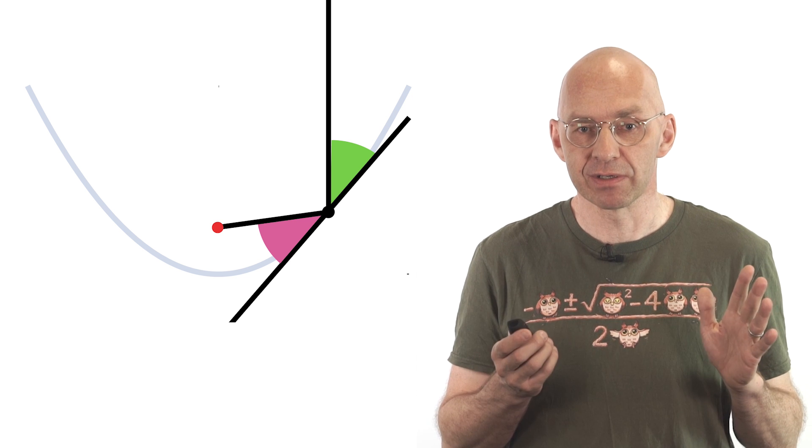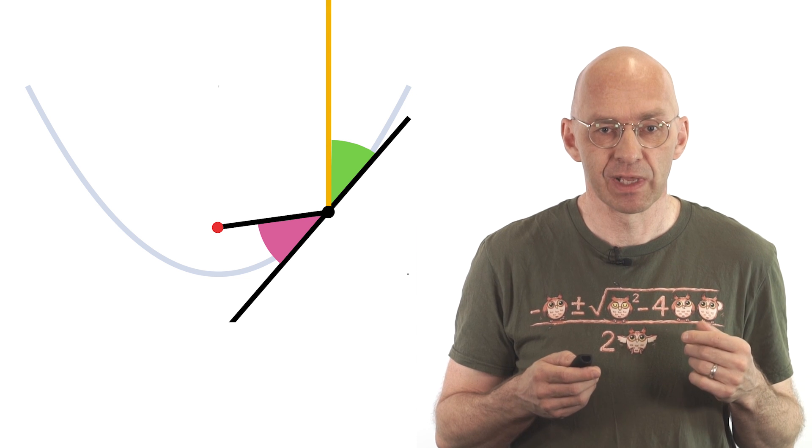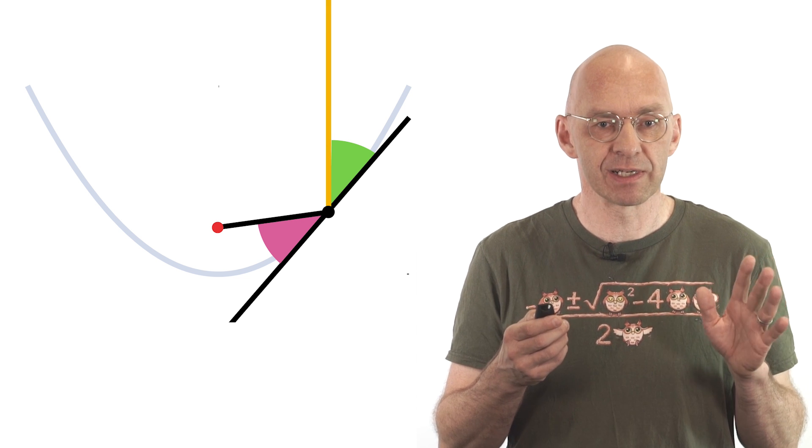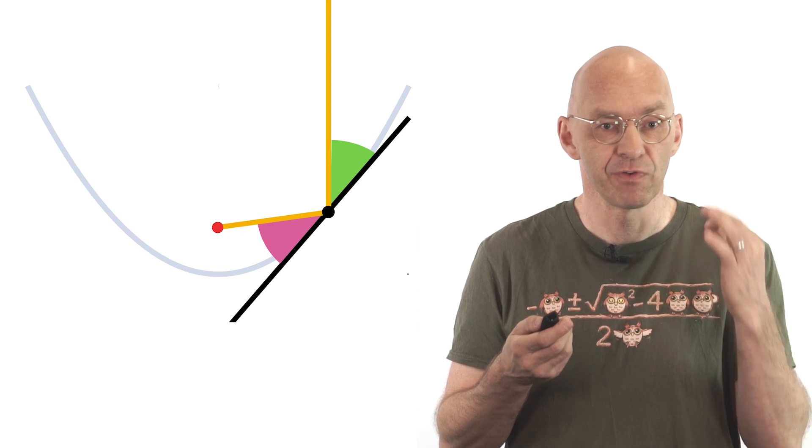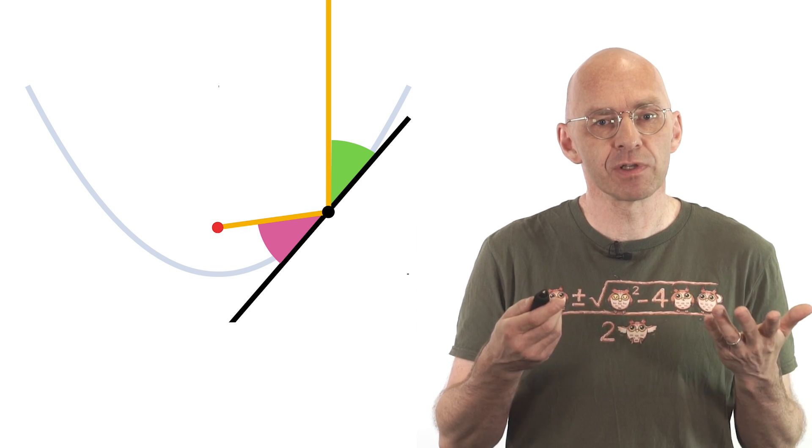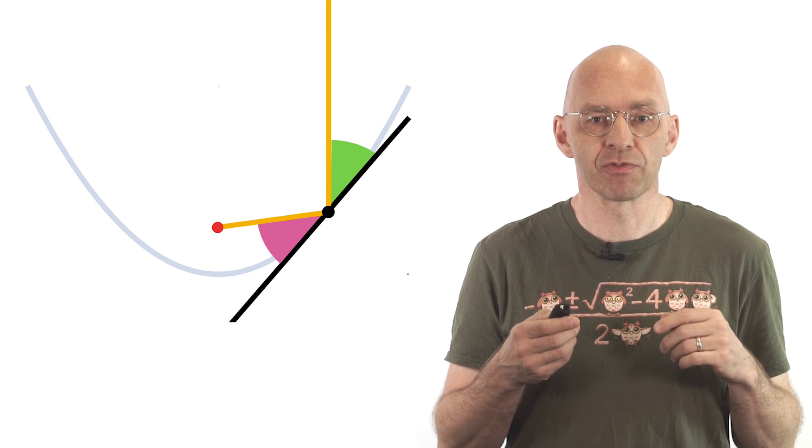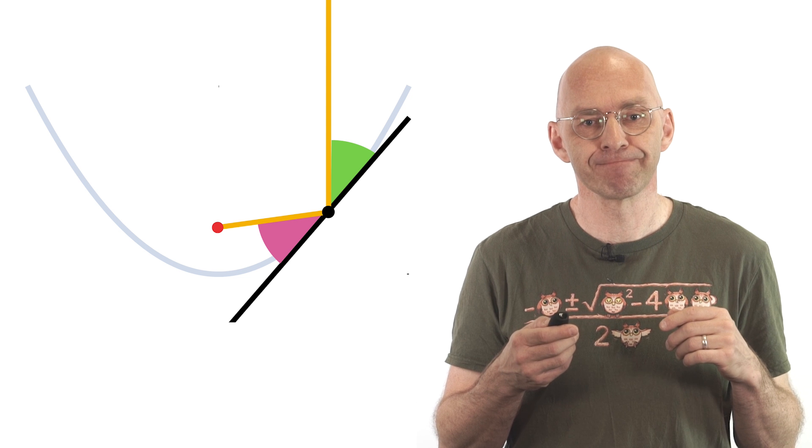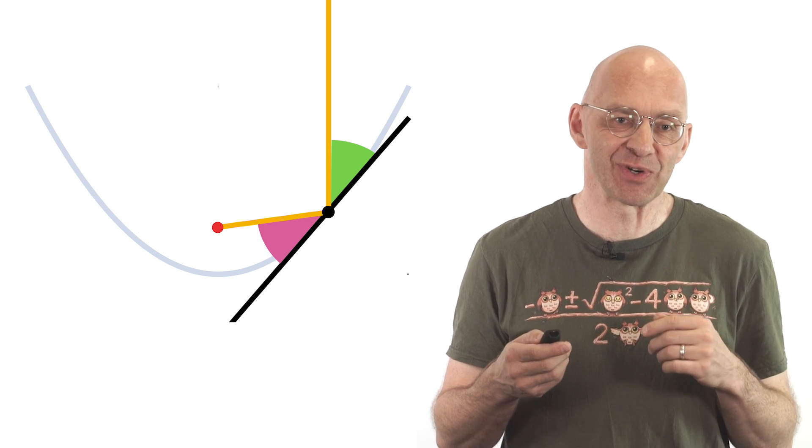There's not much left of our picture but it tells us something super interesting. Imagine the parabola is a mirror and the vertical line is a ray of light hitting the mirror. Then this ray of light will be reflected like this and the reflected ray will pass through the focus. But of course the same is true for any vertical ray of light and so all the vertical rays get focused on the, well, focus. Lucky that that's what we chose to call it.